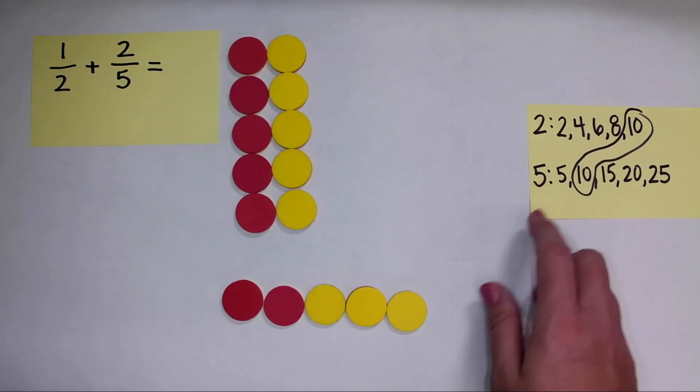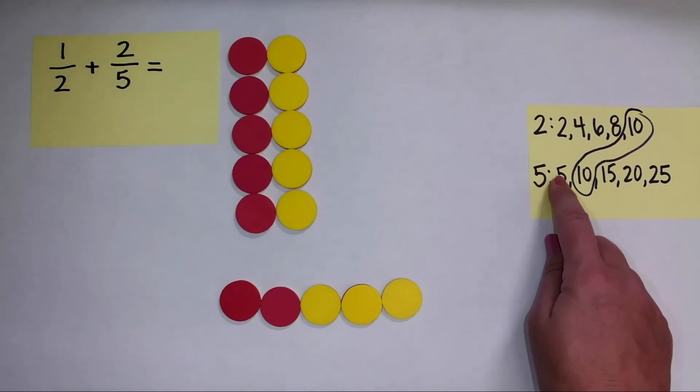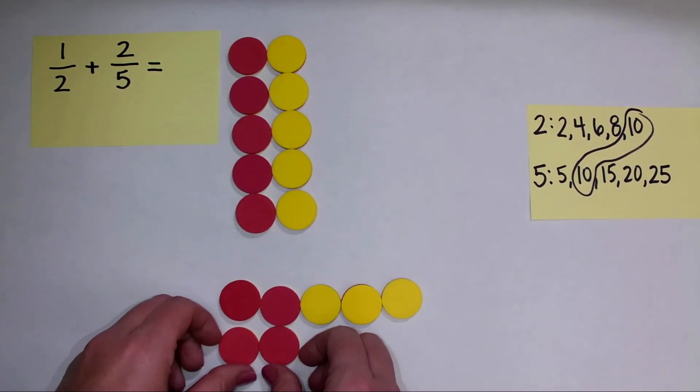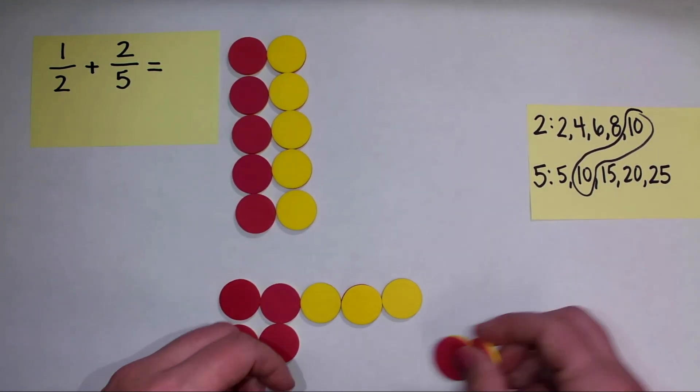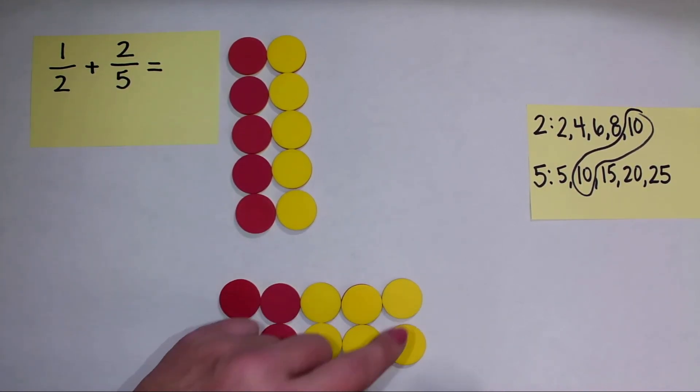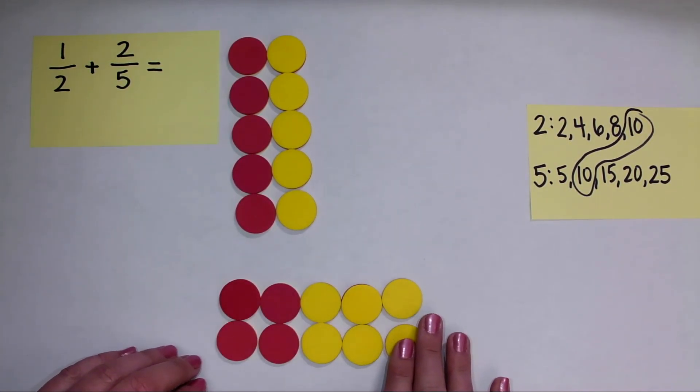Now I'm going to do the same thing with my fraction with a denominator of five. I only need to iterate this once to get to a fraction with a denominator of ten. So that means I copy the fraction. So now I can see that two fifths is equivalent to four tenths.